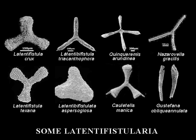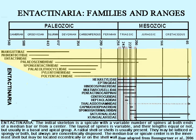In 1981, Kozur and Mostler erected the suborder Entactinaria for radial Spumellarians with a more or less conspicuous initial spicular system of three to five spines on a median bar. True Spumellaria have no spicular system, so most radial species of Paleozoic age previously called Spumellaria are now assigned to the Paleozoic order Entactinaria or the family Entactinidae.